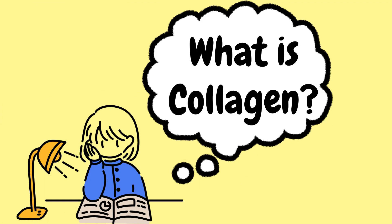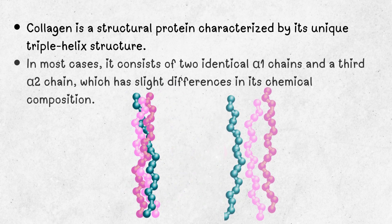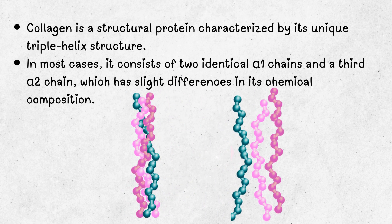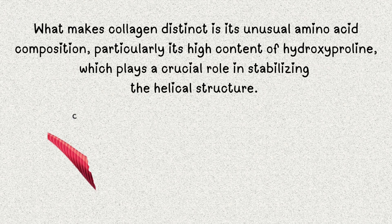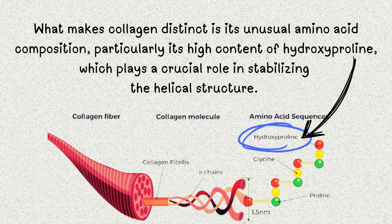What is collagen? Collagen is a structural protein with a unique triple helix structure. It typically consists of two identical alpha-1 chains and a third alpha-2 chain, which has slight differences in its chemical composition. What makes collagen special is its unusual amino acid composition, particularly its high hydroxyproline content, which is essential for stabilizing the triple helix.